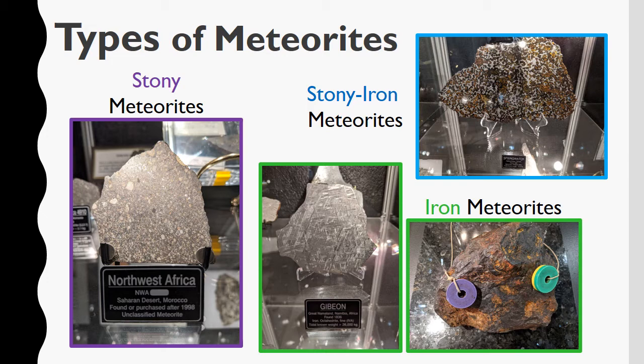Chondrules can be made up of very old material and can tell us more about our solar system. If it doesn't have chondrules, it's called an achondrite. These stony meteorites have lower amounts of iron and nickel and they look similar to the rocks we find near the Earth's surface.